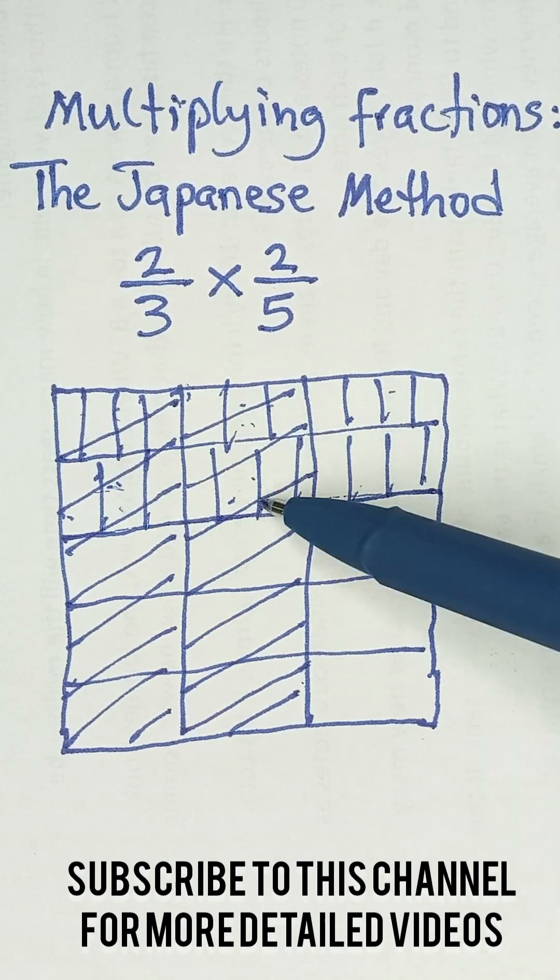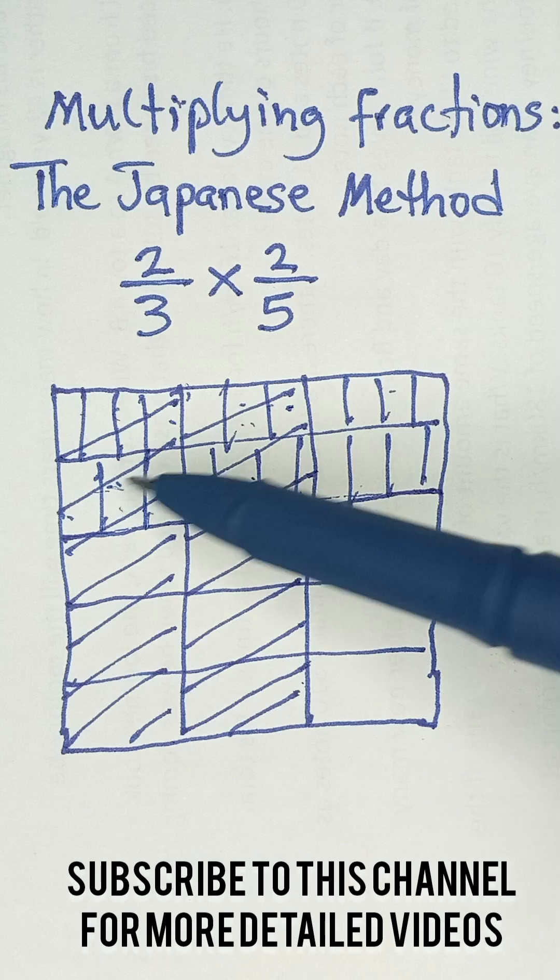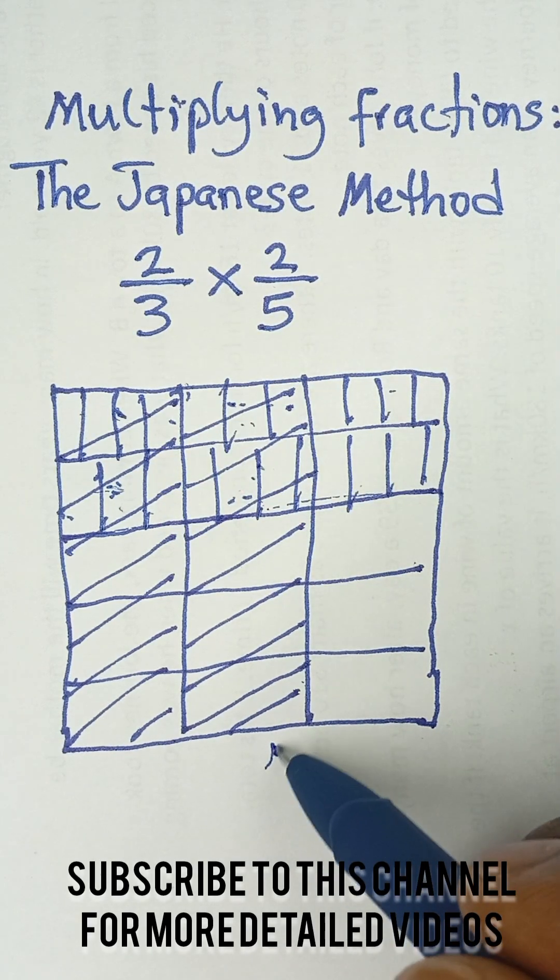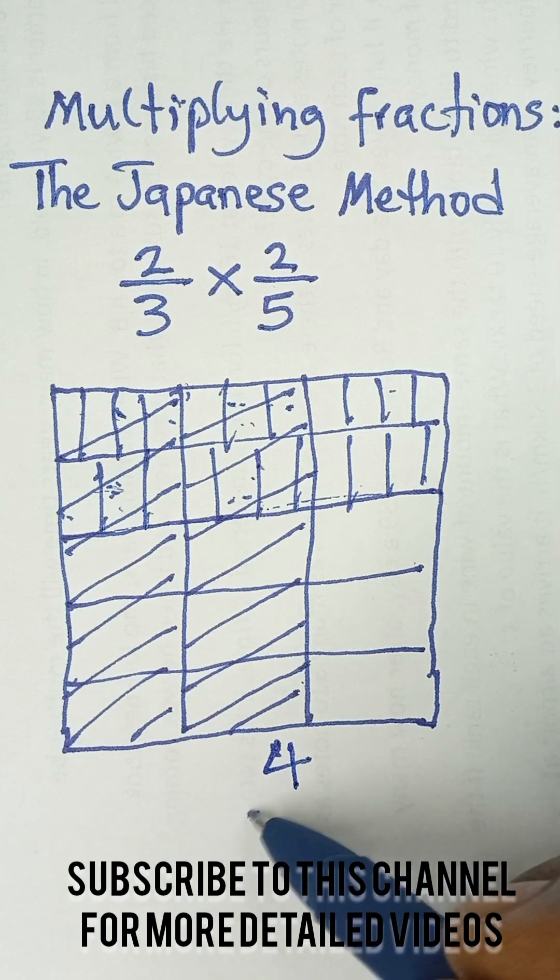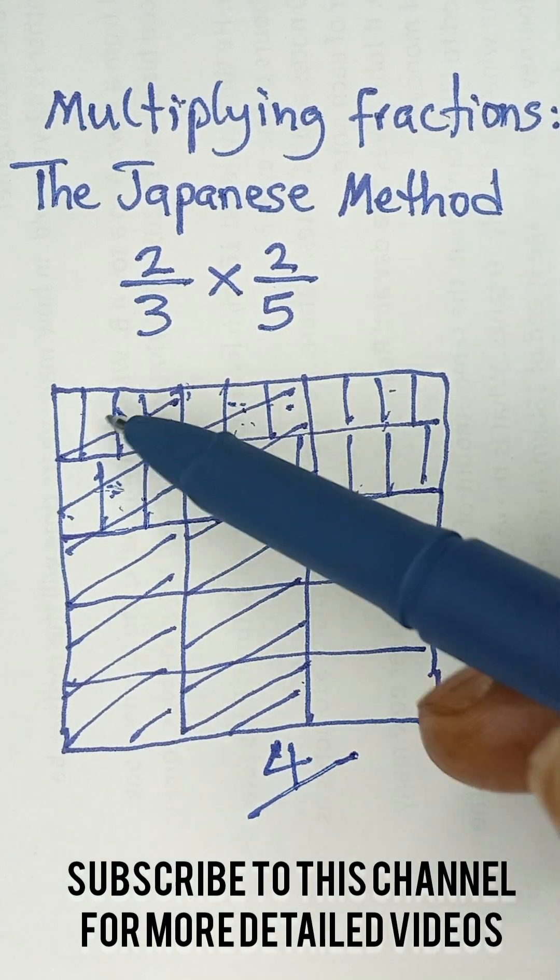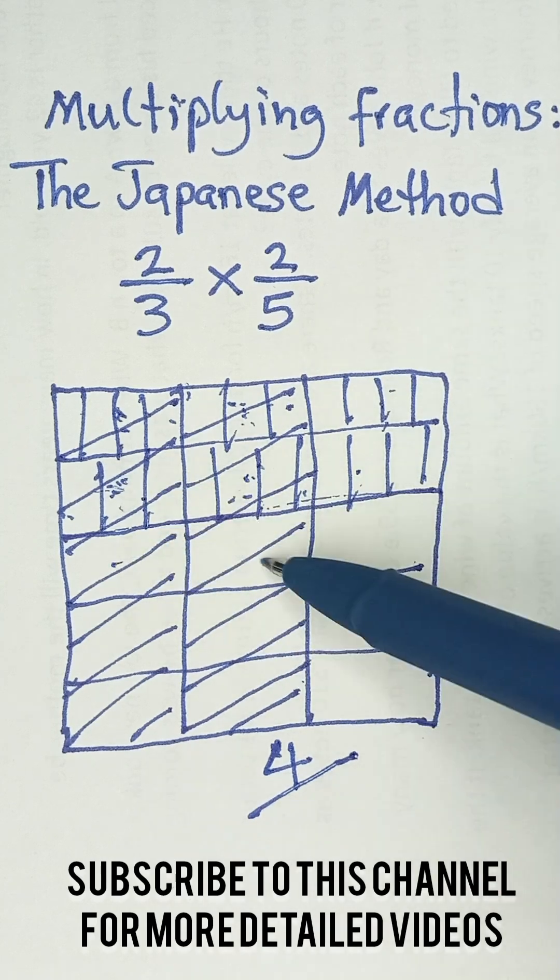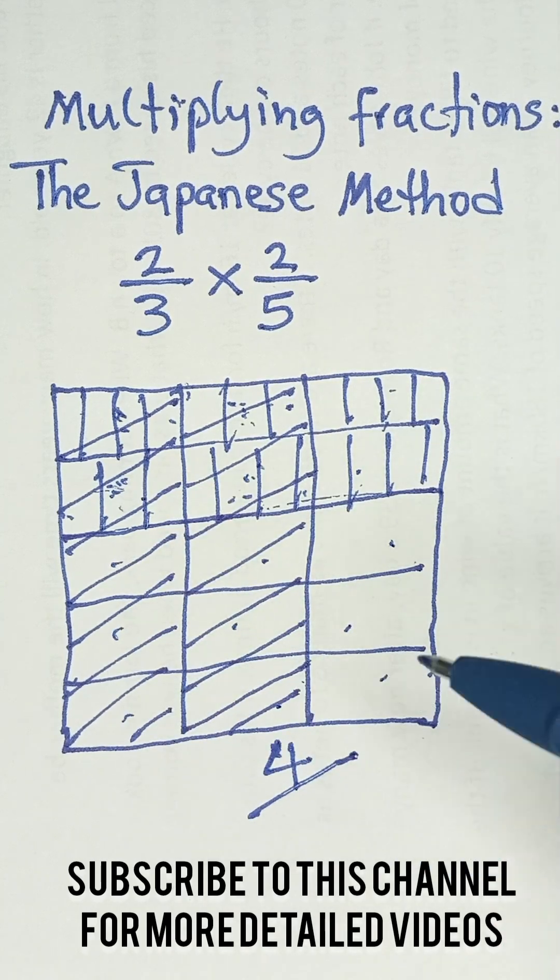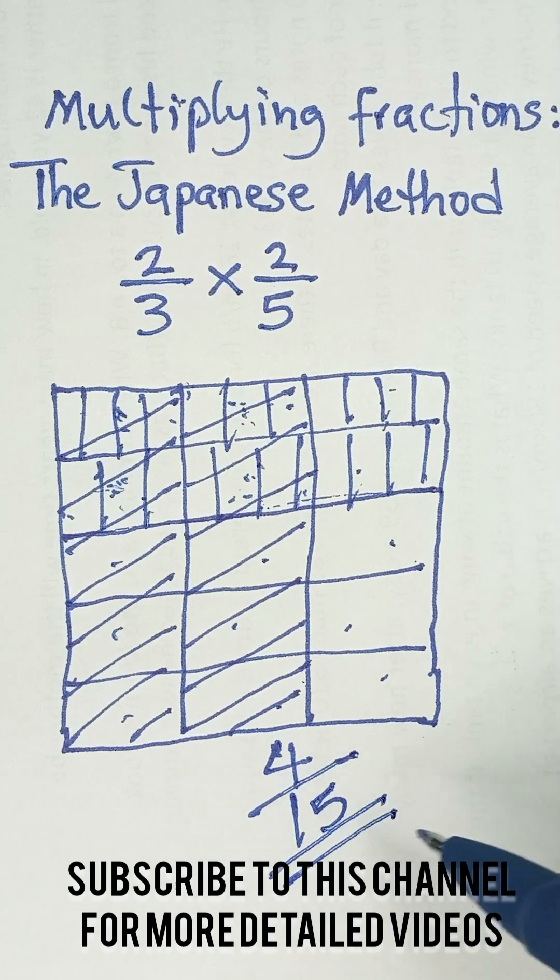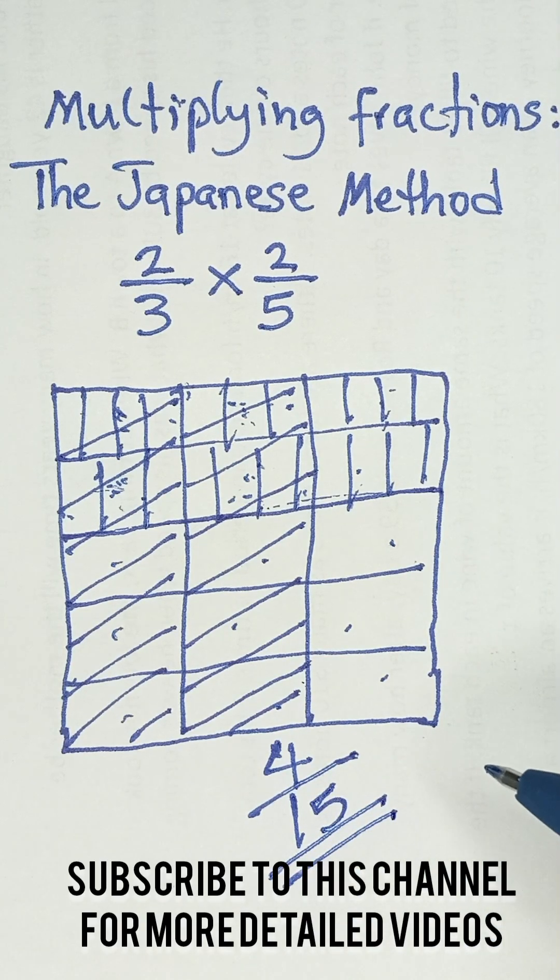So we take these four boxes, and our final answer is 4 divided by the total number of boxes. We have one, two, three, four, five, six, seven, eight, nine, ten, eleven, twelve, thirteen, fourteen, fifteen boxes. So our final answer is 4/15. Hope you enjoyed this special method. Thank you for watching and see you in the next video.